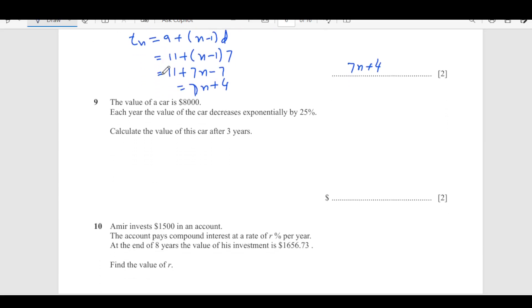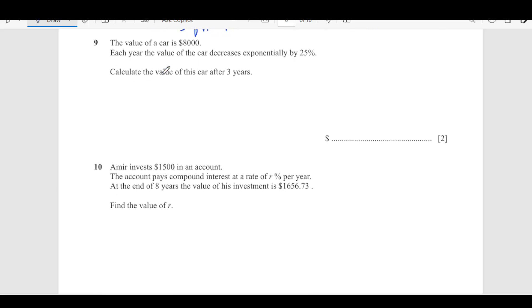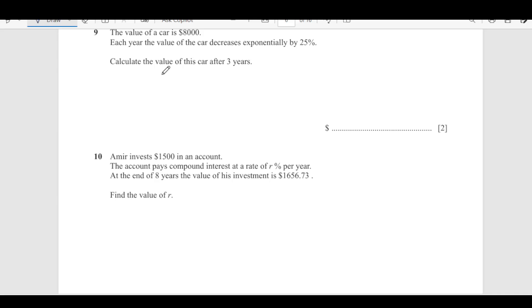Now, number 9, the value of the car is 8,000. Each year, the value of the car decreases exponentially by 25%. So, as you know that the value of investment, when it is decreasing, we are going to take n as minus here. So, it is 8,000 into 1 minus 25 over 100 power 3. Just plug in all these values and you are going to get here 3,375 dollars after decrease of 3 years by 25 percent.